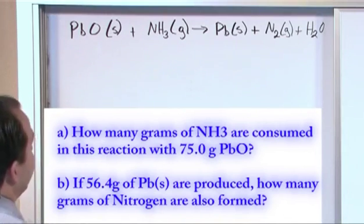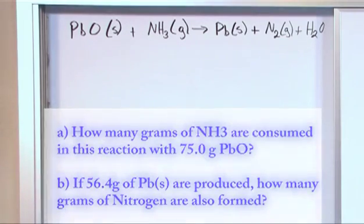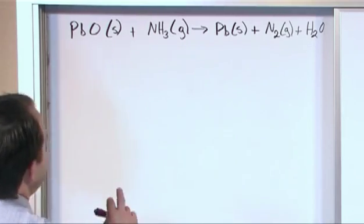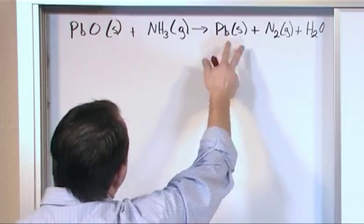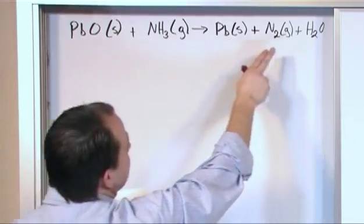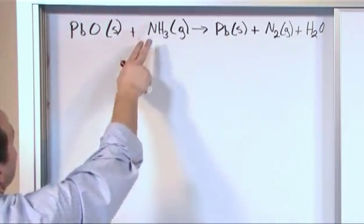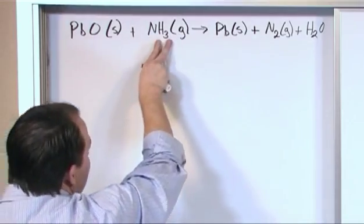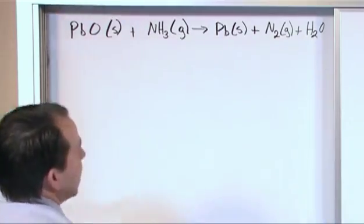Now the first thing we need to do before we do anything is to see if this reaction is balanced. And you'll see right away that it's not balanced, but let's check it. You have one lead, one lead, okay that's fine. One oxygen, one oxygen, okay that's fine. One nitrogen, two nitrogens, well that's not okay. Three hydrogens and two hydrogens, that's not okay either.